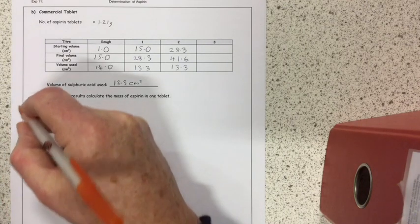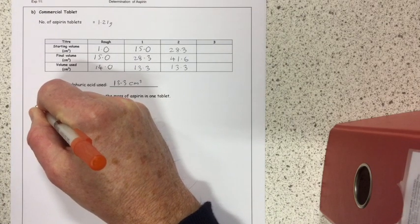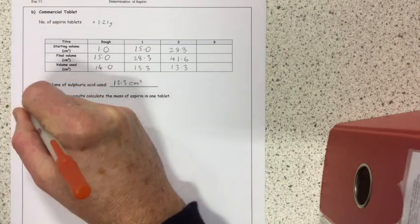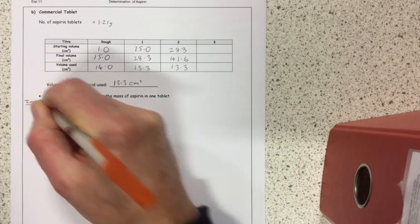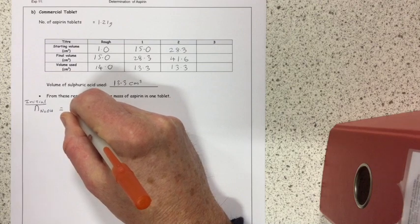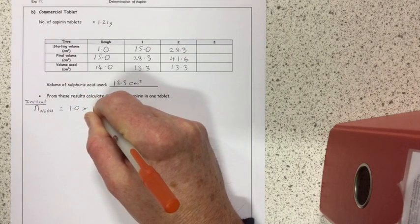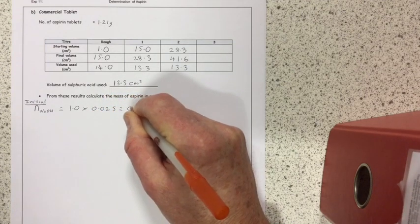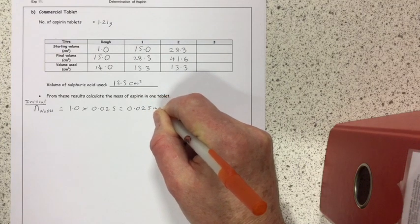So, first thing I have to do is work out the number of moles of sodium hydroxide that we started with. So, we used sodium hydroxide at a concentration of one mole per liter and we used 25 mils of it. So, that means we used 0.025 moles of sodium hydroxide.